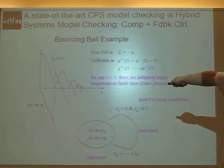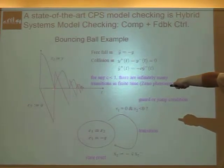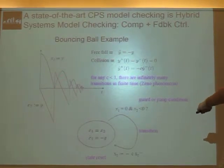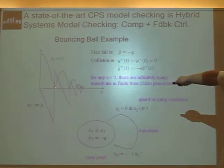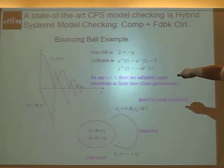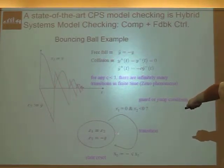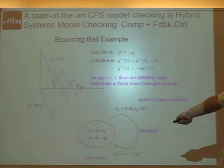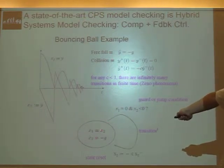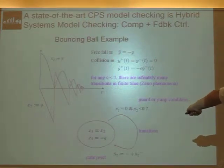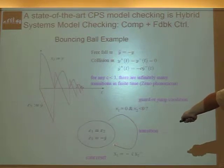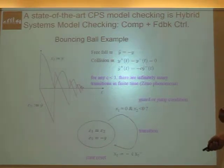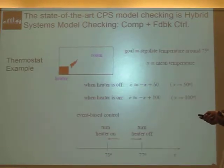Once the ball hits the ground, a discrete event happens — the ball will reverse its velocity, bouncing up. This event is described by an edge. Once it is bounced off, it is again governed by Newtonian law, described by the differential equation set. So this is a typical example of hybrid system modeling, which combines the differential equation set describing the continuous-time behavior of a physical object, and the edges that describe discrete events that change your differential equation set.